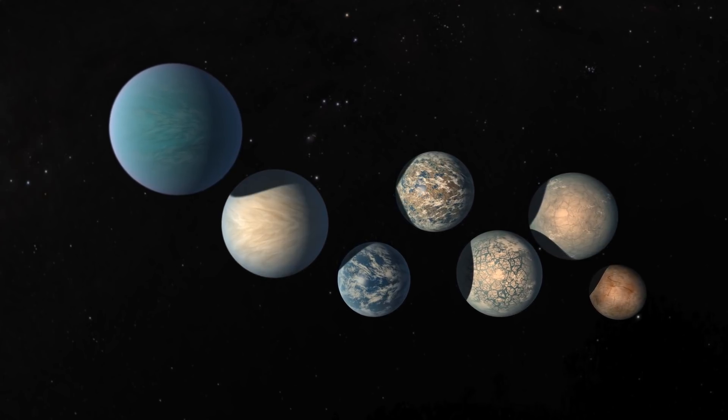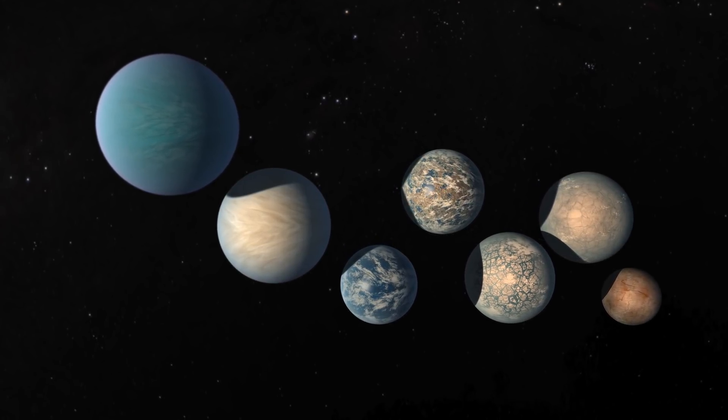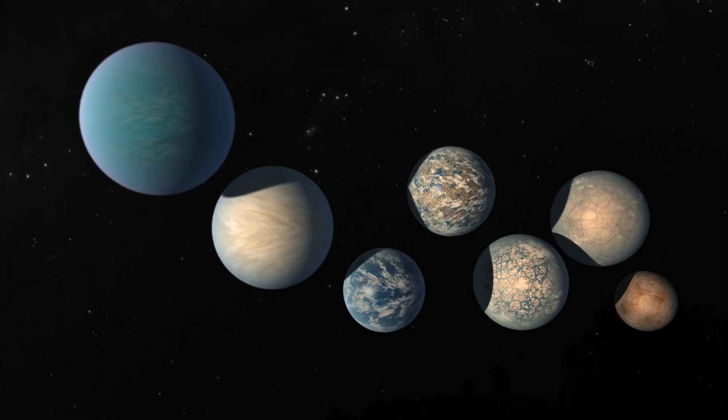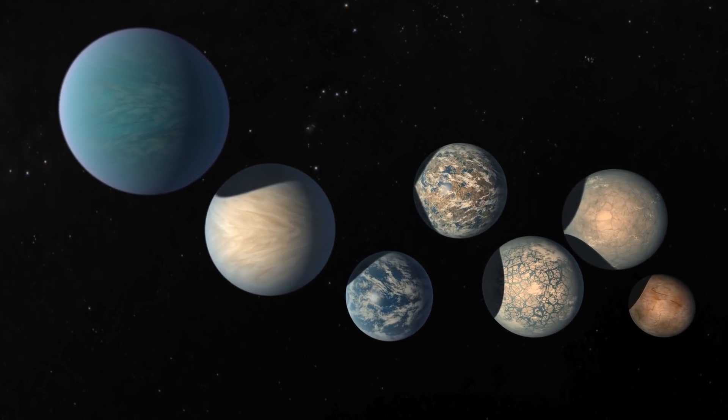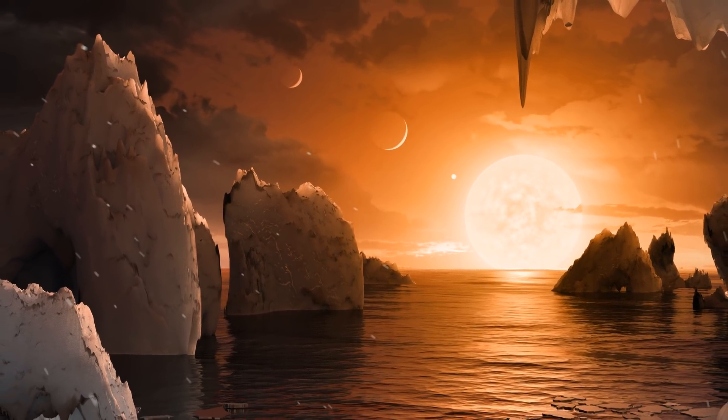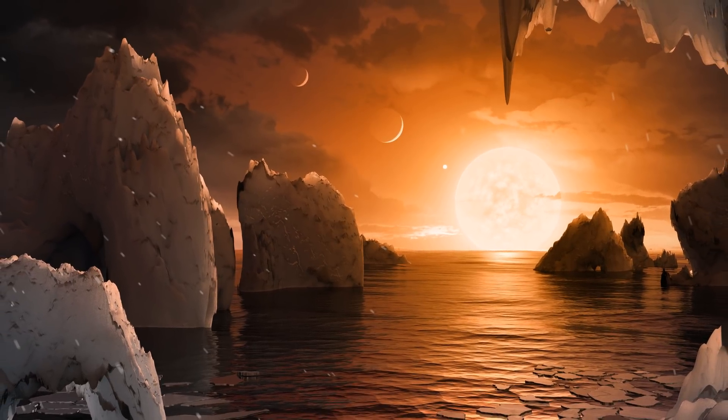It turns out that the TRAPPIST-1 system is ideal for this kind of measurement. The planets are so close together that they have particularly strong gravitational effects on each other that create noticeable variations on the order of a few minutes.